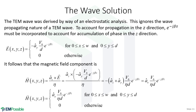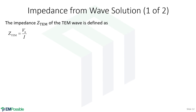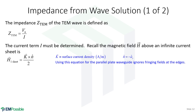Since we know both the electric and magnetic fields, now we can calculate an expression for the impedance of our TEM wave. Impedance is defined as the applied voltage divided by the current. We haven't discussed current yet, but we can find it because we've calculated the magnetic field. From magnetostatics, if we know the magnetic field we can figure out the current. If we have a sheet of current, the surface current density K in amps per meter, crossed with the surface normal and divided by two, gives the magnetic field. For us, the surface normal is in the negative Y direction.